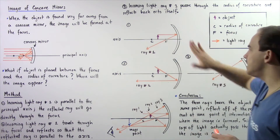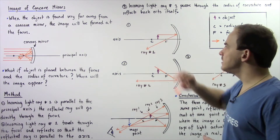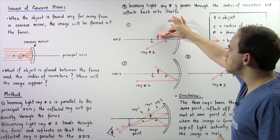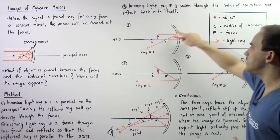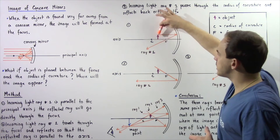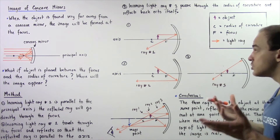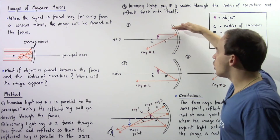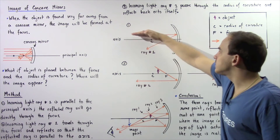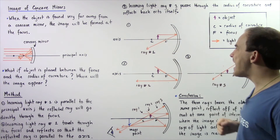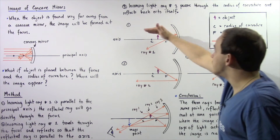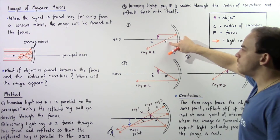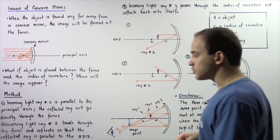Let's see exactly what we mean by looking at diagram one. In diagram one we have our concave mirror, the principal axis, and our object shown by a purple arrow — the height of the arrow represents the height of our object. Incoming light ray number one bounces off our object and travels directly parallel with respect to the principal axis. Because it is parallel, it will reflect and pass through the focus. Now let's move on to step number two.